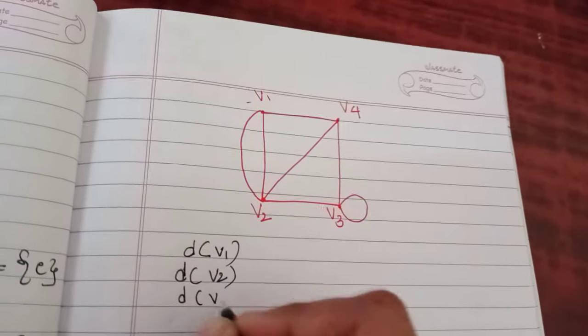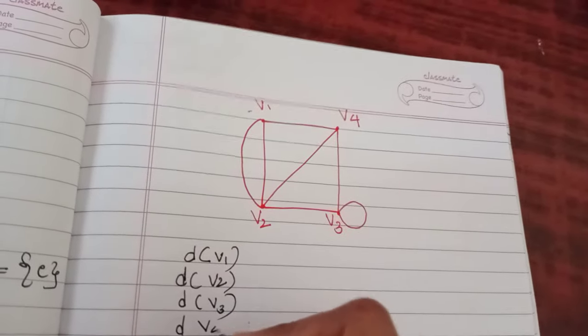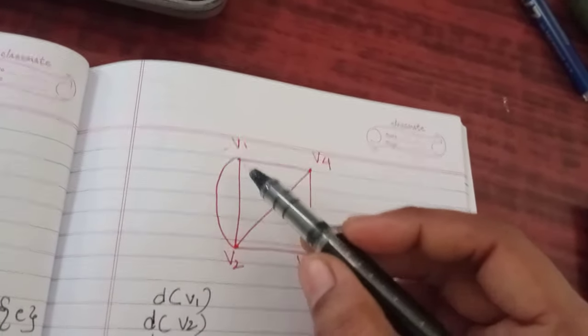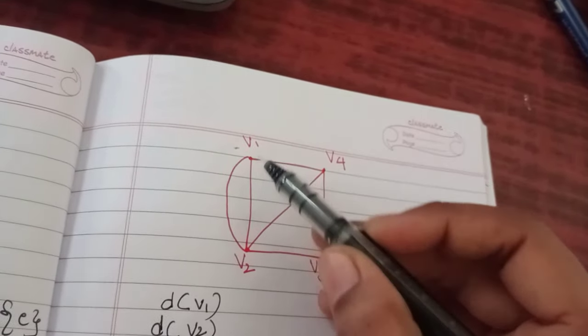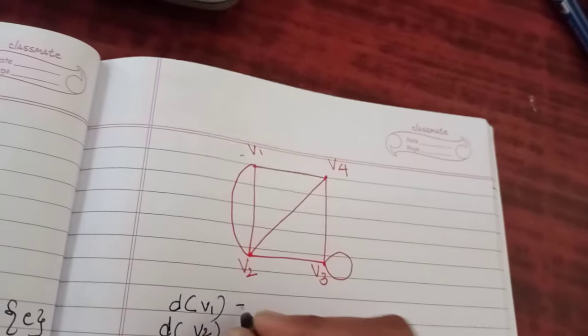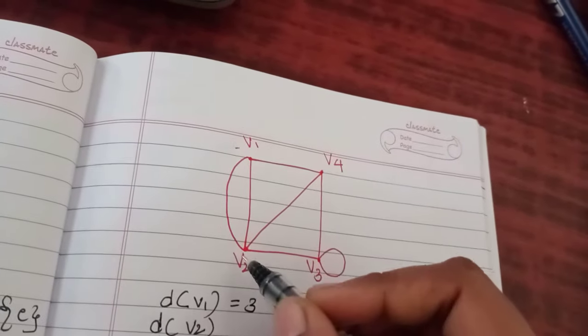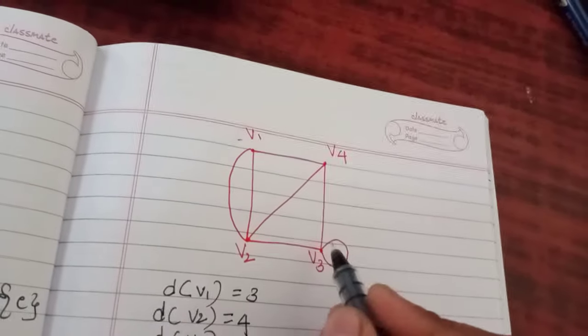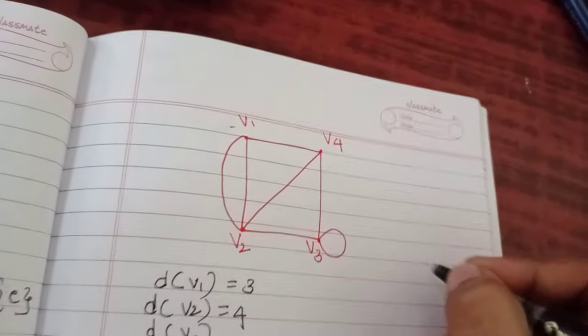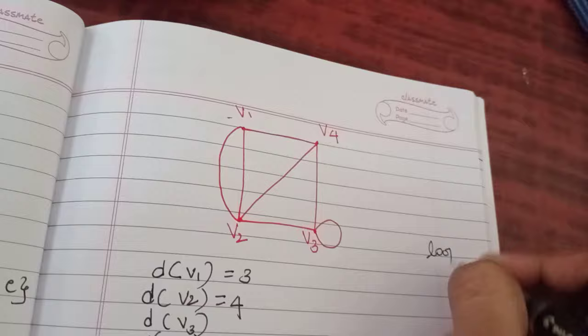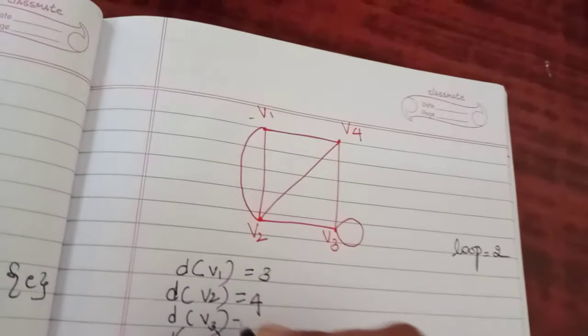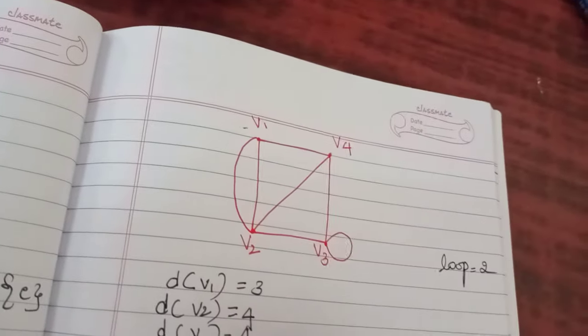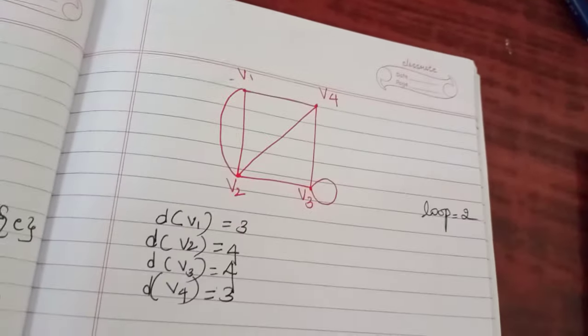Degree of v3 and degree of v4. So since you have four vertices, if you see the degree of v1, you have one edge, two edge, three edge, that means degree of v1 is 3. Degree of v2: one, two, three, four. Degree of v3, since it has a loop and it is an undirected graph, you should count the loop as two. So two, three, and four, v3 has four. And v4 has one, two, three.